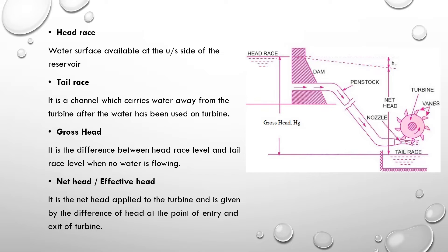First, head race — the water surface available at the upstream side of the reservoir. This upstream surface is the head race. Next, tail race — it is a channel which carries water away from the turbine after the water has been used by the turbine. This is the tail race.